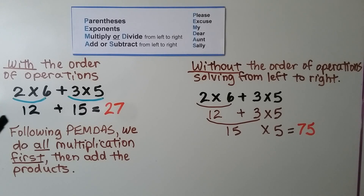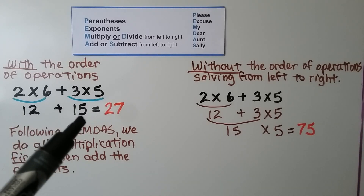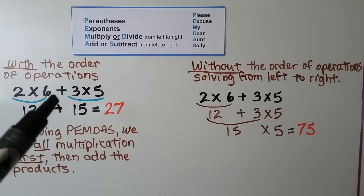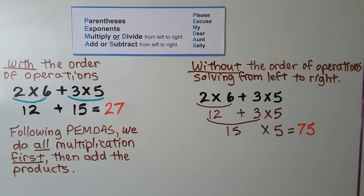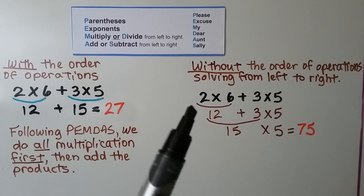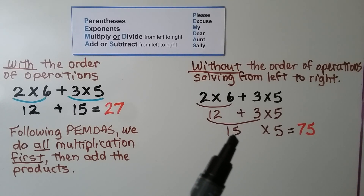Here, with the order of operations, we see multiplication so we do that first: 2 times 6 is 12, and 3 times 5 is 15. Then we add: 12 plus 15 equals 27. Following PEMDAS, we do all multiplication first, then add the products. Without the order of operations, solving left to right: 2 times 6 is 12, plus 3 is 15, and 15 times 5 equals 75 — a completely different answer.